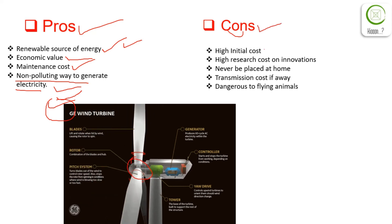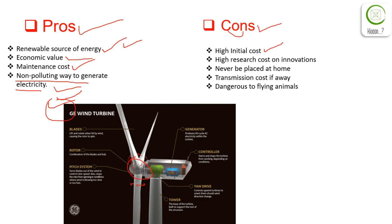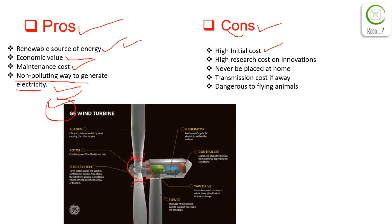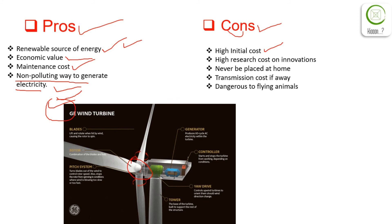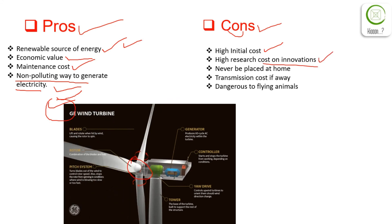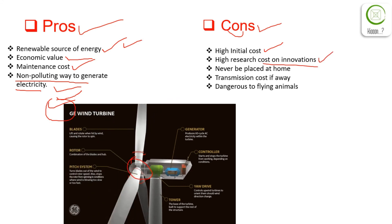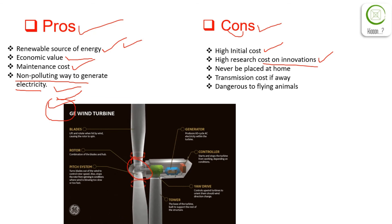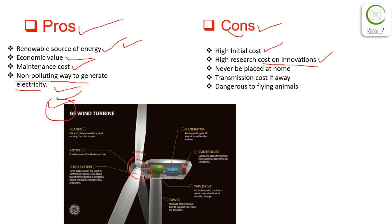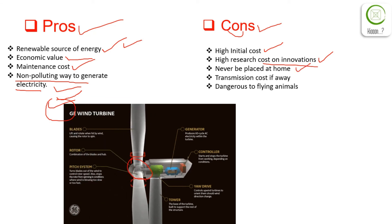Now the cons. The first con is the high initial cost — the cost to install a wind turbine is very high. The second con is the high research cost for its innovations and operations, because we have to continuously innovate the technology in order to increase efficiency.